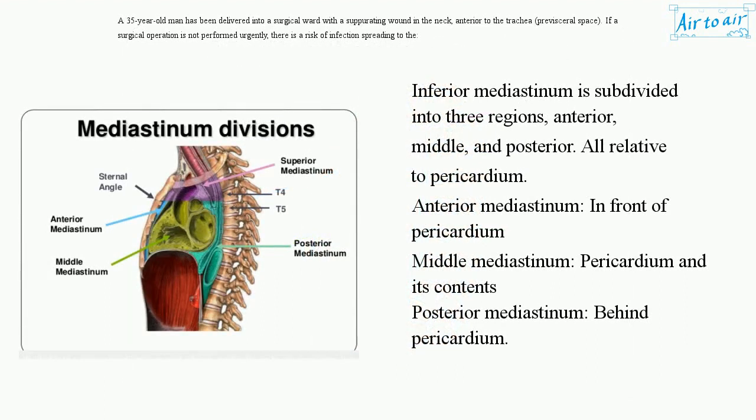Mediastinum is subdivided into three regions: anterior, middle, and posterior, all relative to the pericardium. Anterior mediastinum is in front of the pericardium; middle mediastinum is the pericardium and its contents; posterior mediastinum is behind the pericardium.